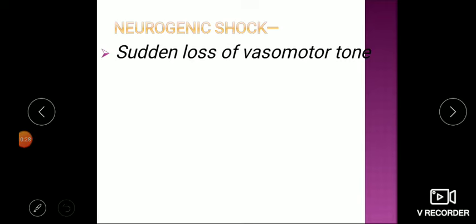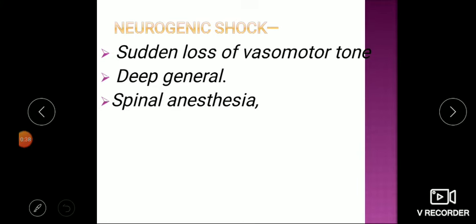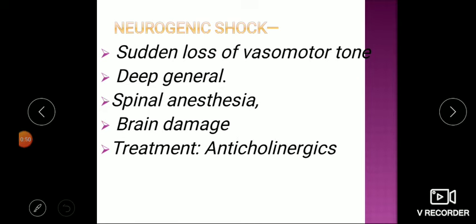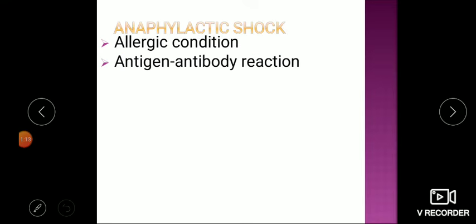For neurogenic shock, which is due to sudden loss of vasomotor tone — caused by spinal cord damage, deep general anesthesia, spinal anesthesia, or brain damage in accidents — treatment is basically anti-cholinergics to bring vessel tone back to normal. For anaphylactic shock due to drug reactions, for example penicillin triggering an antigen-antibody allergic reaction, substances are released from basophils and mast cells including histamine, causing vasodilation and decreased blood pressure.